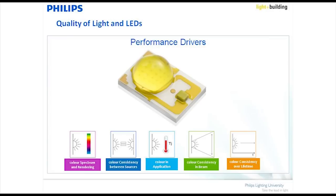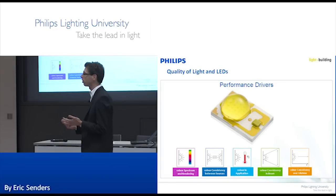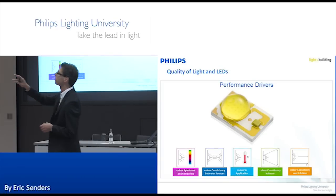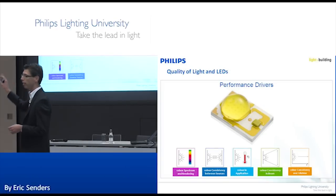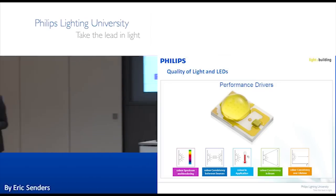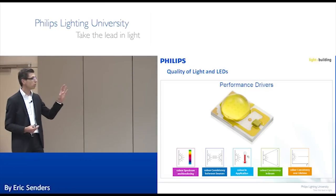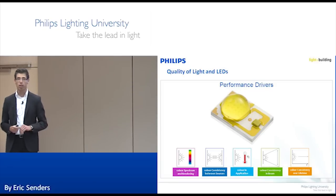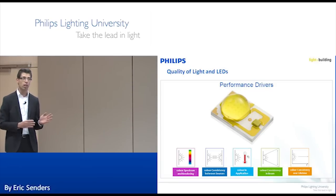The second element is color consistency. Color consistency means ensuring that when you light different LEDs, there is no visible difference between one light source and another. There are parameters we can use to make sure you get similar LEDs from one light source to another.